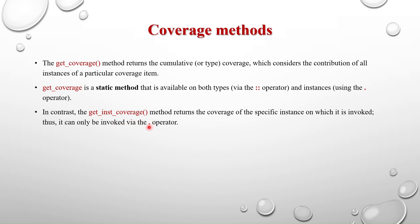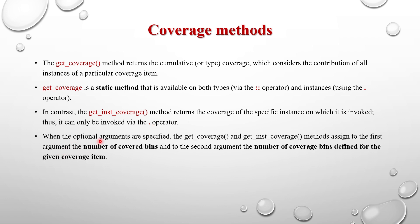When optional arguments are specified, get_coverage and get_inst_coverage assign to the first argument the number of covered bins, and to the second argument the number of coverage bins defined for the given coverage item. So the first argument 'covered' specifies the number of covered bins, and the second argument 'total' specifies the number of coverage bins defined for the given coverage item. Let's go to the example to see exactly what these mean.